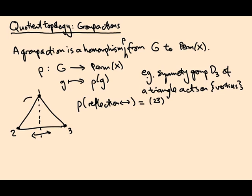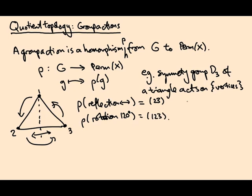And if I did a rotation instead, rho of the rotation by 120 degrees would be the permutation (1,2,3). This is just an example of a group action in a very simple case. So we're going to be interested in group actions on topological spaces.